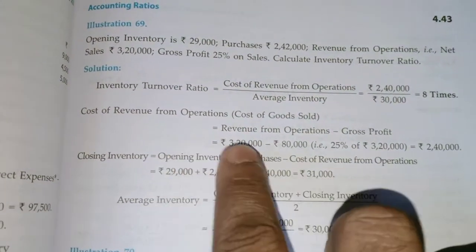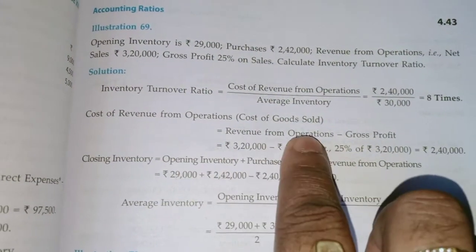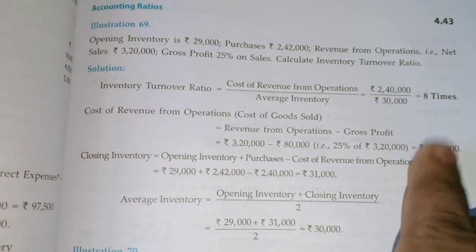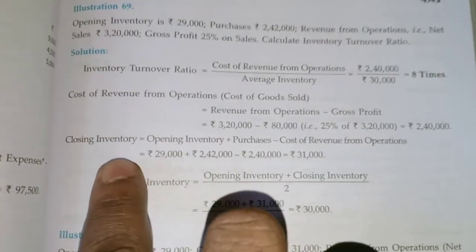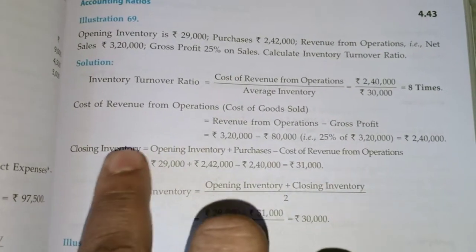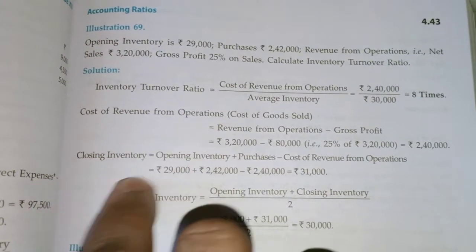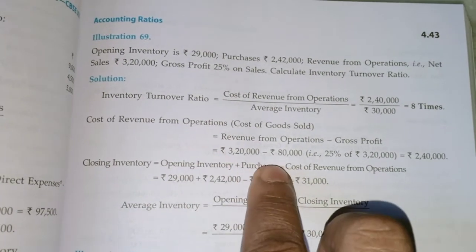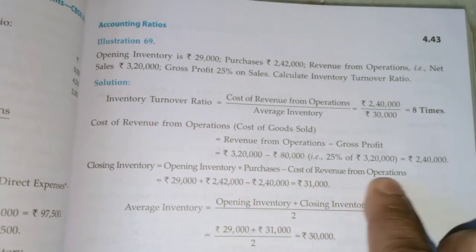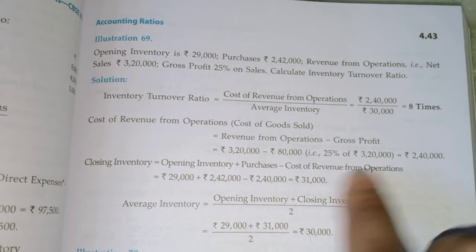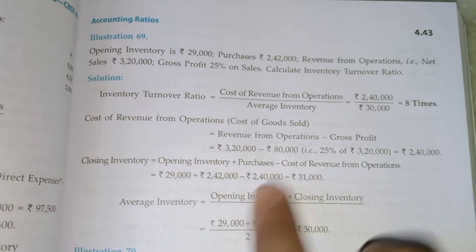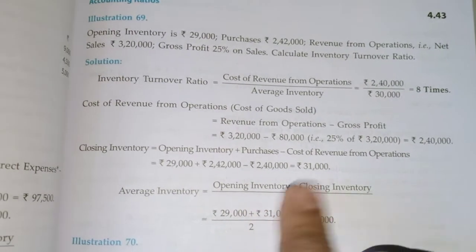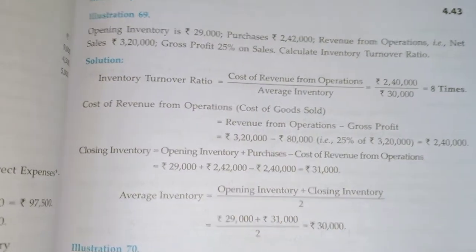The key point in this question is that we subtracted gross profit from revenue from operations to get cost of revenue. The second point is how to calculate closing inventory: Opening Inventory + Purchases minus Cost of Revenue from Operations gives closing inventory. Thank you.